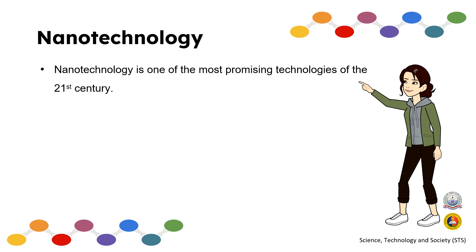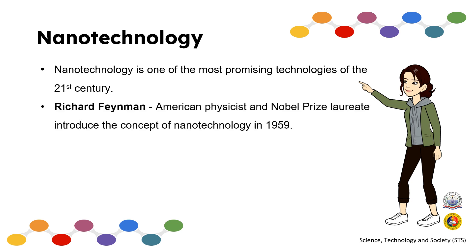While nanotechnology is the ability to observe, measure, manipulate, assemble, control, and manufacture matter at the nanometer scale. The imaginative pioneers of nanotechnology: the American physicist and Nobel Prize laureate Richard Feynman introduced the concept of nanotechnology in 1959. Feynman made the hypothesis: 'Why can't we write the entire 24 volumes of the Encyclopedia Britannica on the head of a pin?'